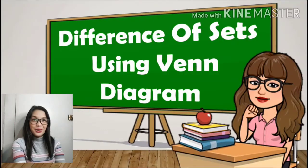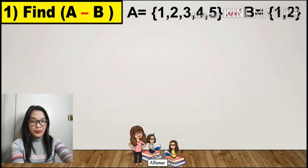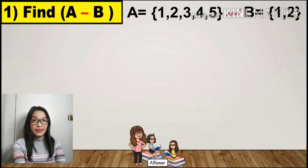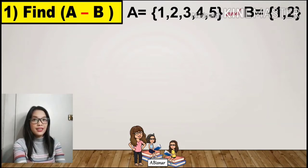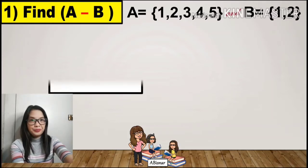Let's proceed to the difference of sets using Venn diagrams. We're going to use a rectangle to represent the universal set and circles to represent the subsets.